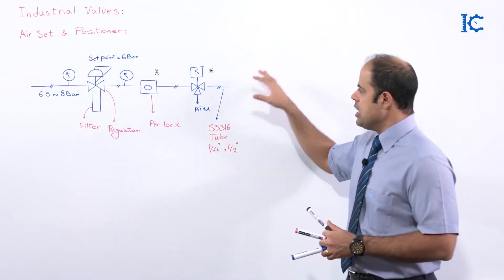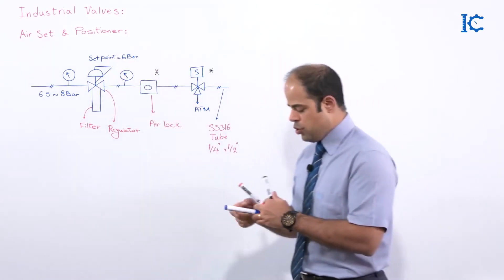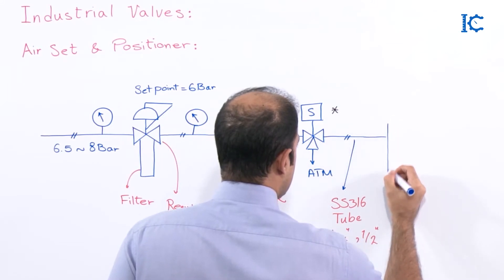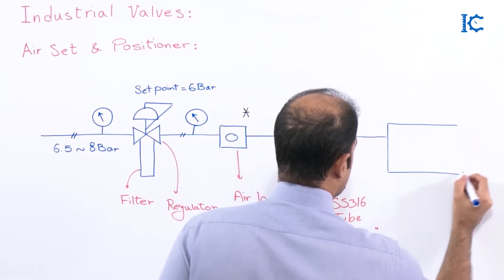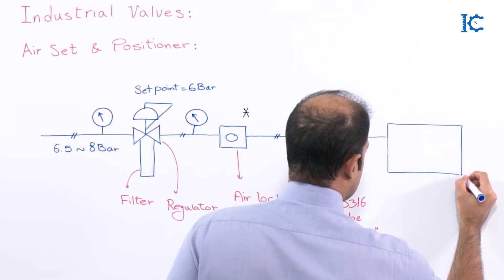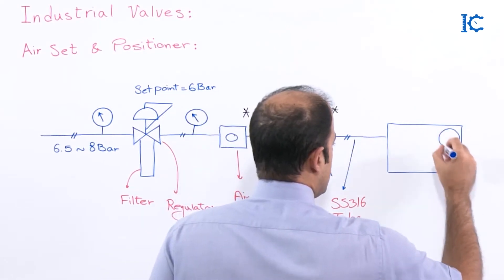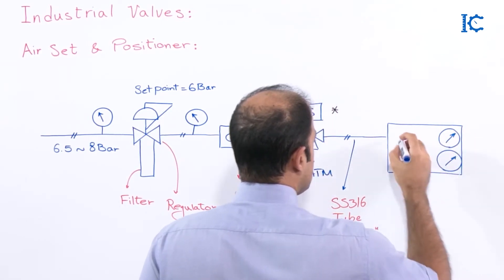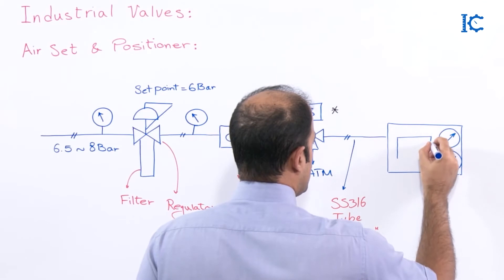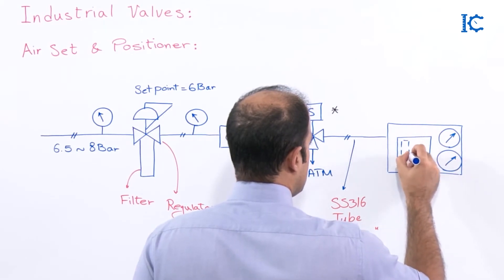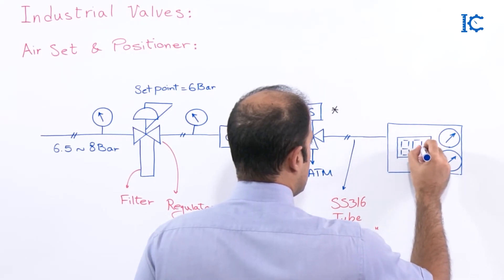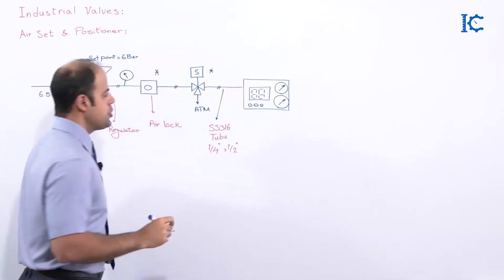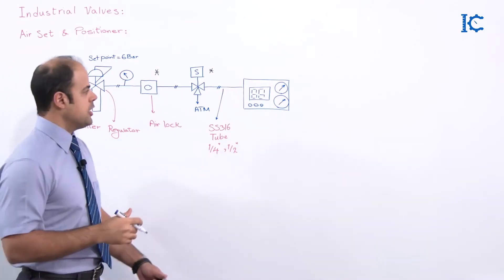Okay, after that we have the positioner that I want to talk about now. So this is the positioner, as you can see something just like it. On some positioners you are able to find two pressure gauges something just like it. Some of them actually are equipped with a display too. And there are some other maybe cursors or buttons or things like that on it too.